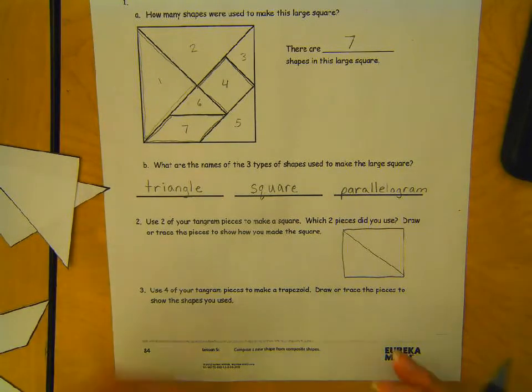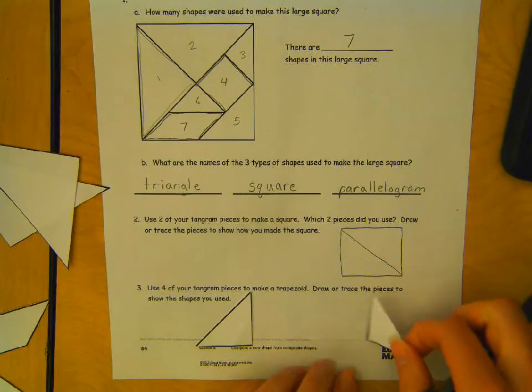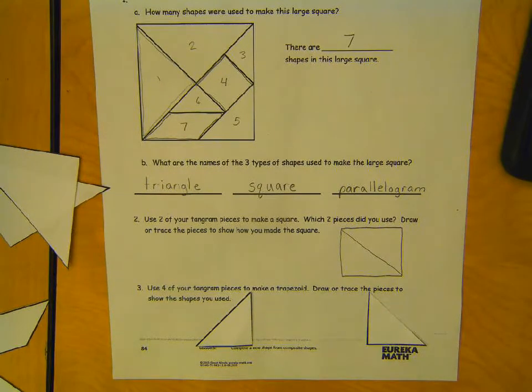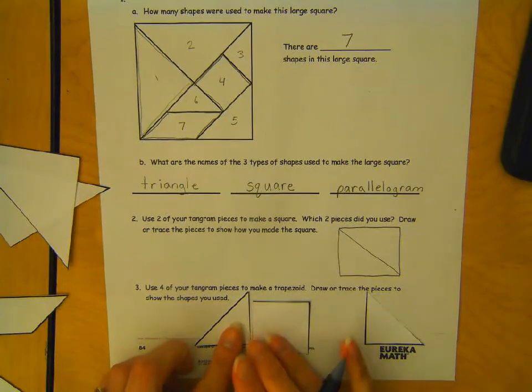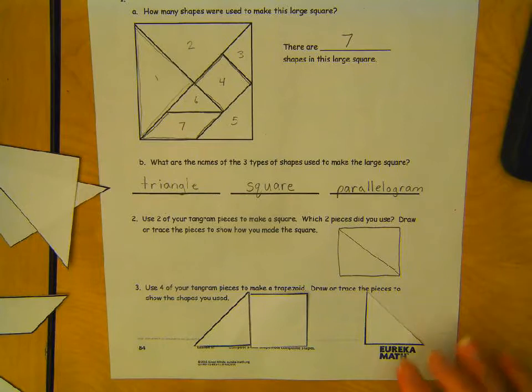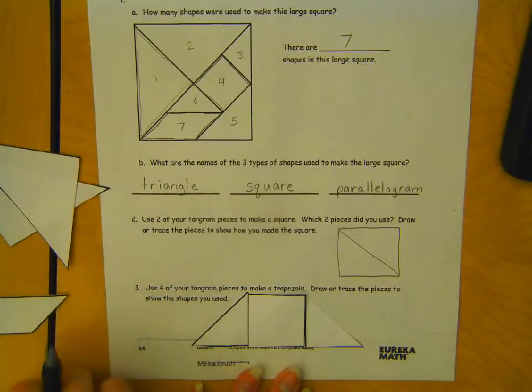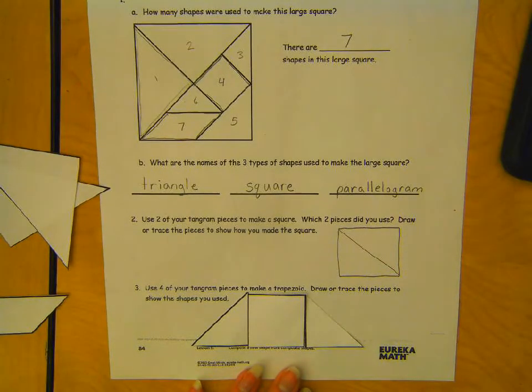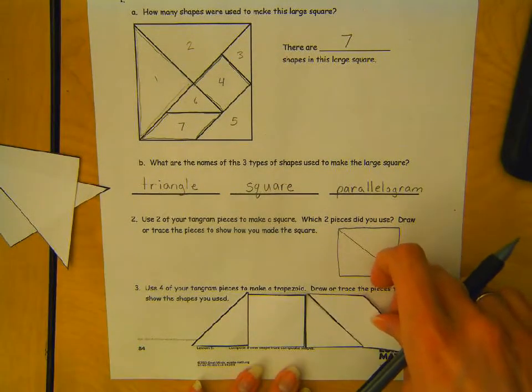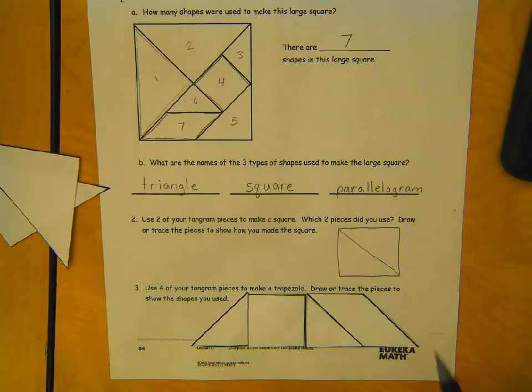Use that triangle and that triangle. Maybe a square. Put that over there. There we go. Okay. So, I have triangle, square, triangle, and my parallelogram.